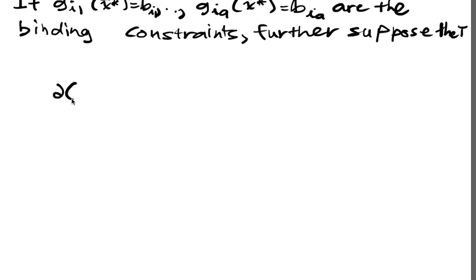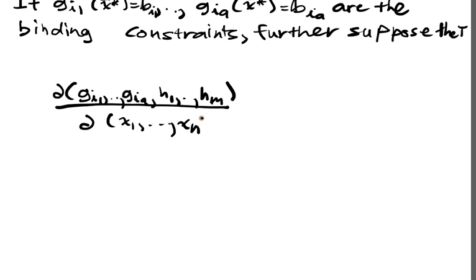If you form this Jacobian, where you just consider the functions Gi1 up to GiA and also the functions yielding the equality constraints, you take the Jacobian with respect to all variables.